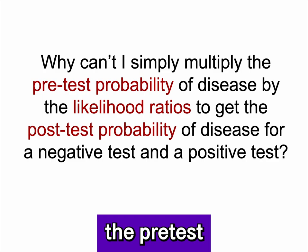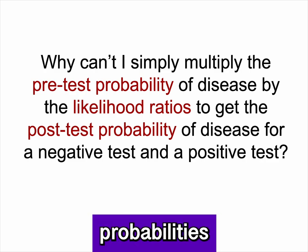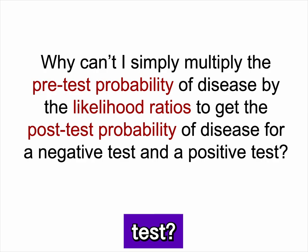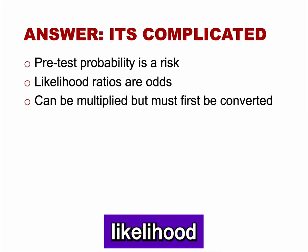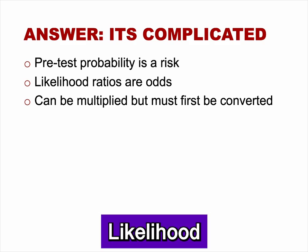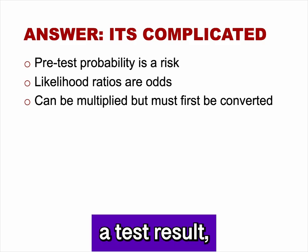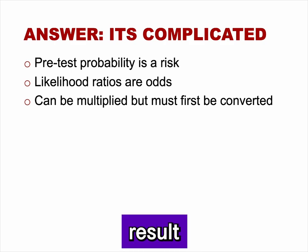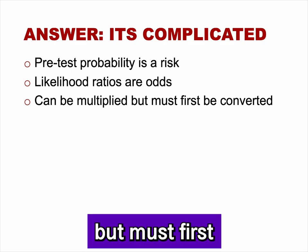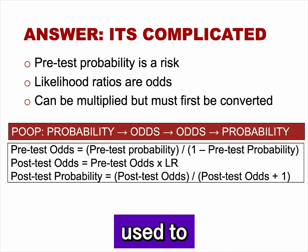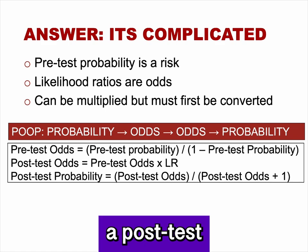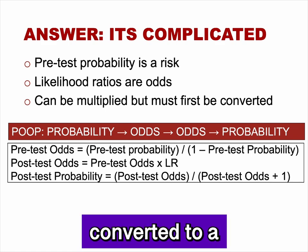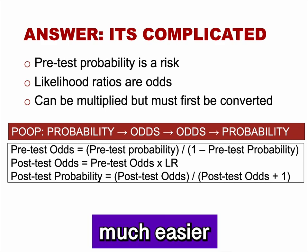Why can't you simply multiply the pretest probability by the likelihood ratio to get the posttest probability? Because pretest probability is a risk — the likelihood of disease out of the total number of patients — while likelihood ratios are odds. They can be multiplied but must first be converted. Pretest probability is first converted to pretest odds, which is then multiplied by the likelihood ratio to get posttest odds, which is then converted back to posttest probability.